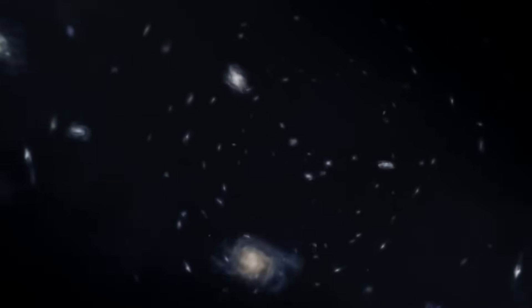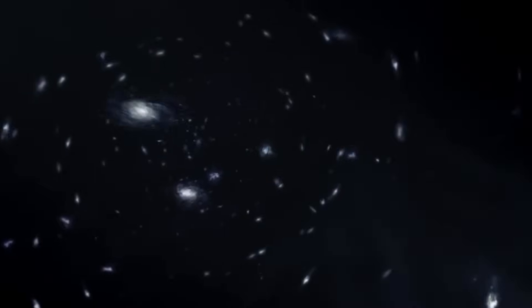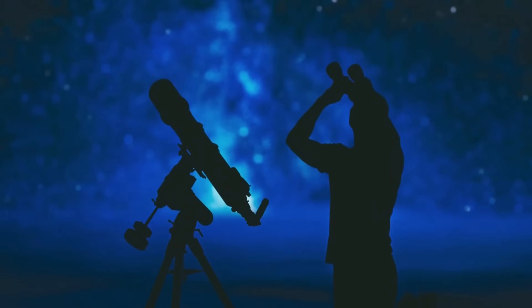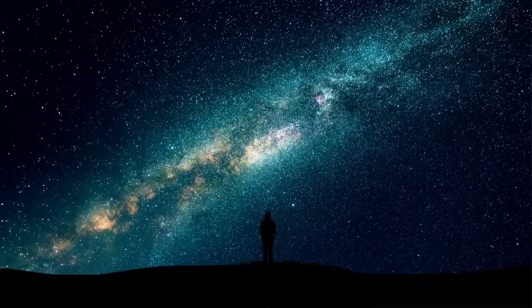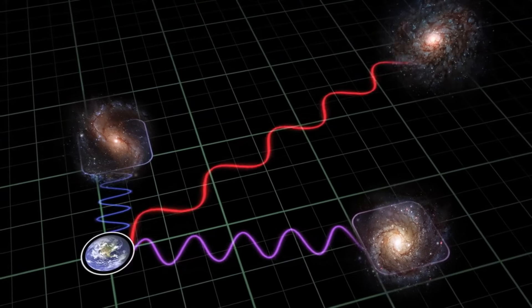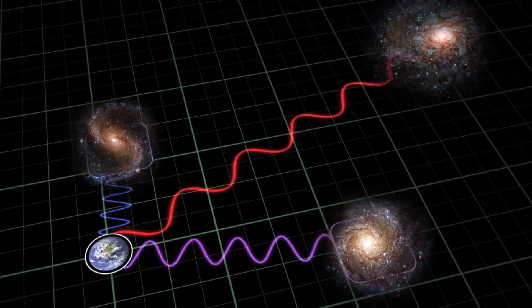To understand the shapes of distant galaxies, we first need to understand how we can observe them. As you may know, light travels at a finite speed, which means that when we look at distant objects in the sky, we are actually seeing them as they were in the past. The farther away an object is, the longer it takes for its light to reach us, and the older it appears.